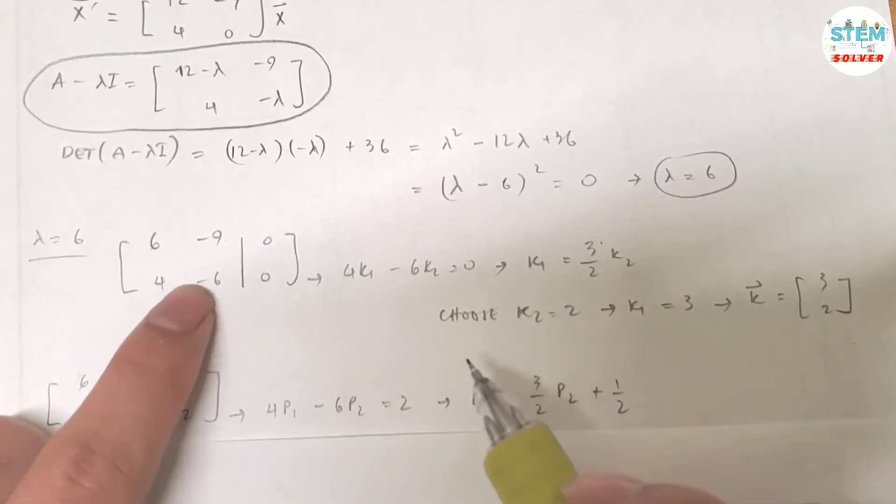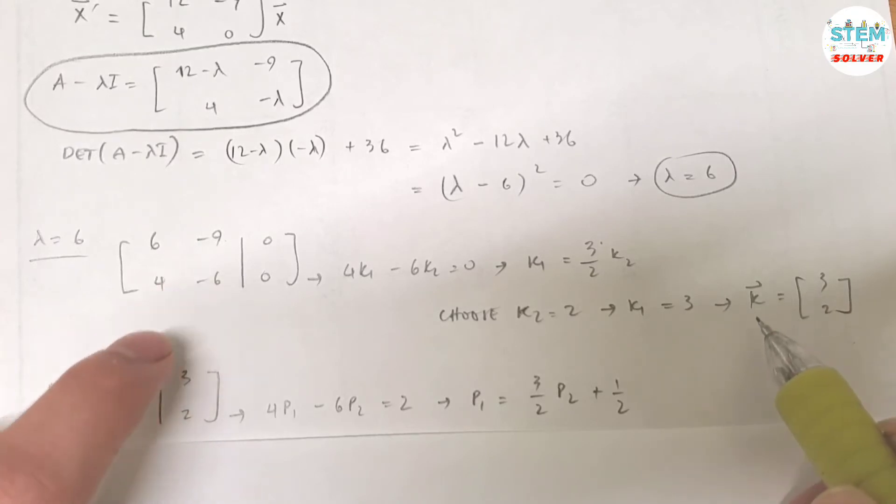So what you are going to do is to take this matrix, augment it with whatever vector you just found, which is this. So I'm gonna take this, augment it with vector k, which is 3, 2.